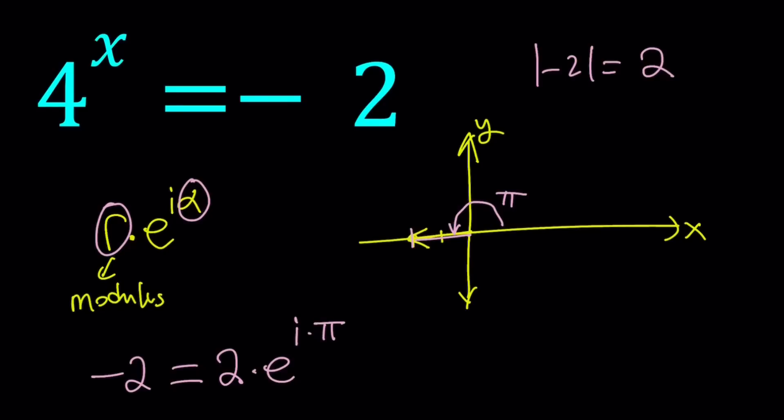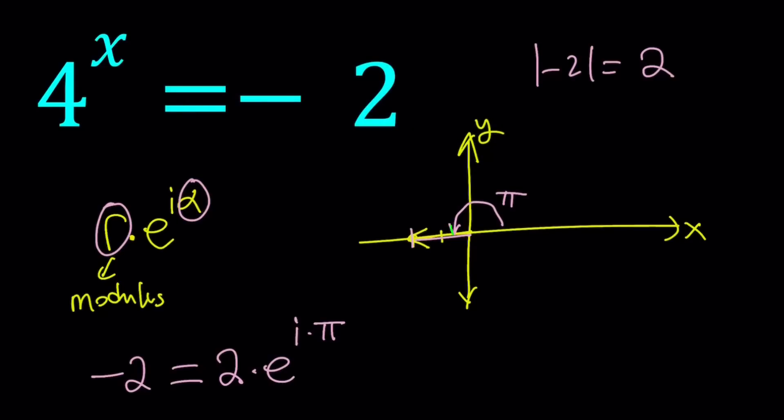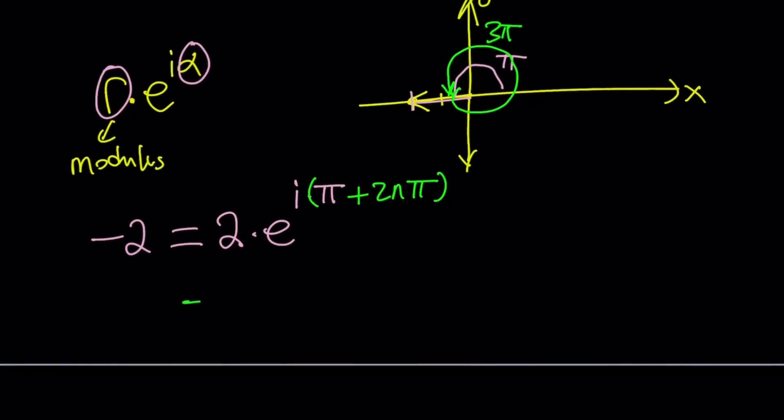So we can write it as 2 times e to the power i pi. But the story doesn't end here because pi is one of the angles for which this is true. If you make one more rotation, let's say you went to pi, and then you went another 2 pi on top of that, which made it 3 pi. That also works. 5 pi, 7 pi. You get the idea? Odd multiples of pi. So we're going to add multiples of pi. So I'm going to write it as 2n pi. And now we're just going to write it like this. I will be multiplied by that. But I'm going to simplify it a little bit and kind of write it this way. 2 times e to the power 2n plus 1 times pi, and then multiply by i.